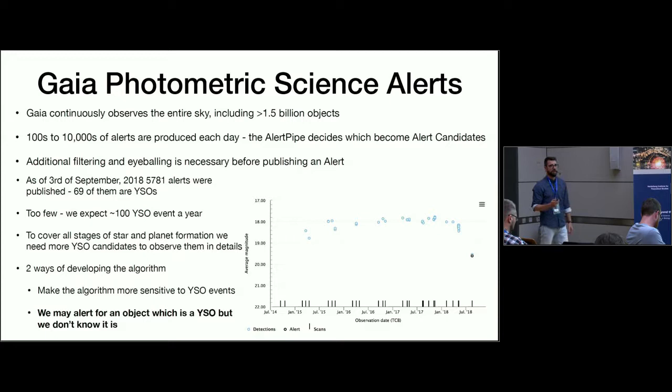How Gaia comes into the picture is that Gaia is an all sky survey that observes the entire sky. The catalogs include more than one and a half billion objects. As it scans the sky it goes back to a source from time to time, so it is able to see variations in the brightness.